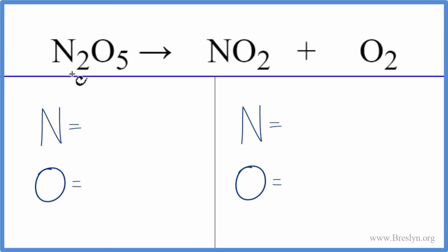In this decomposition reaction, we have N2O5 decomposing into NO2 plus O2. Let's count the atoms up on each side and then balance the equation.